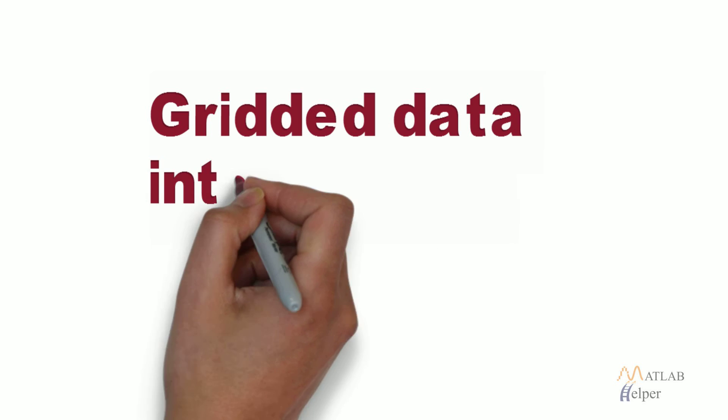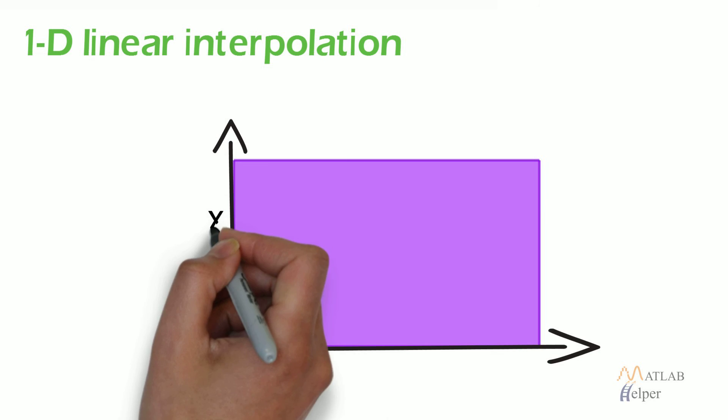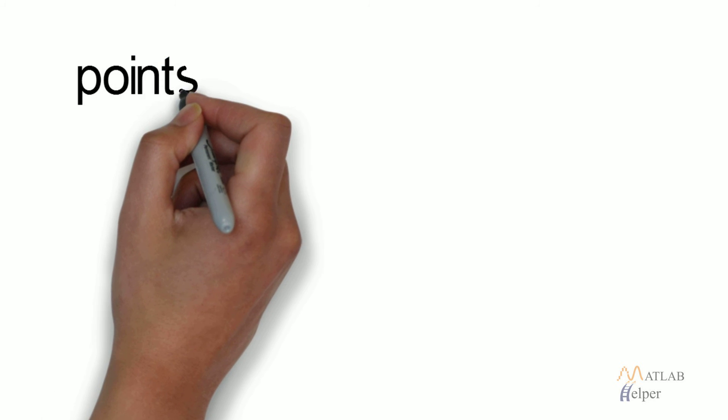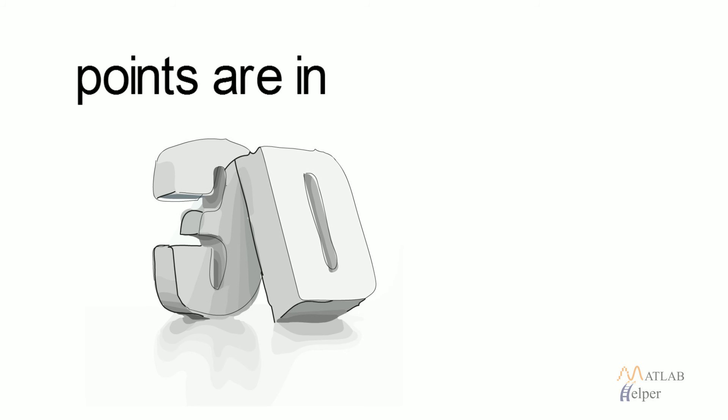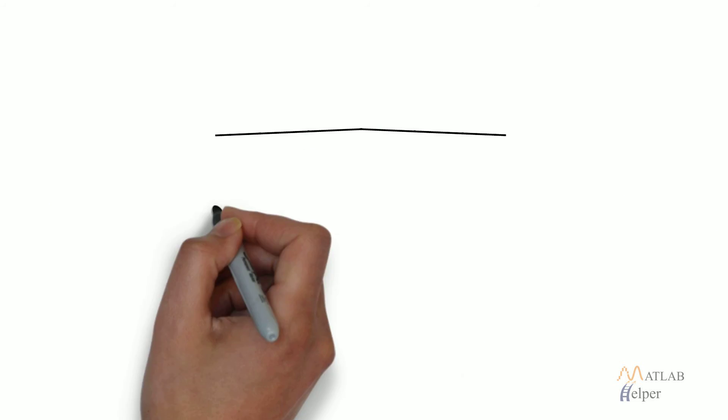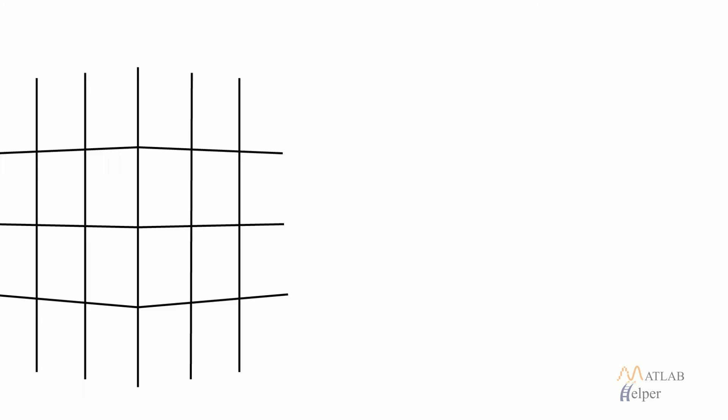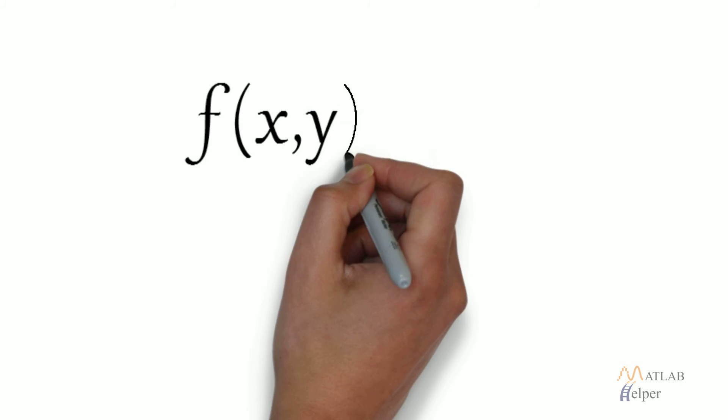Gridded Data Interpolation. 1D Interpolation is used when data points lie on a two-dimensional plane. But when these points are in a 3D surface, we use 2D interpolation. Here, we are going to look at gridded data interpolation. We consider data points to be a function of two variables.